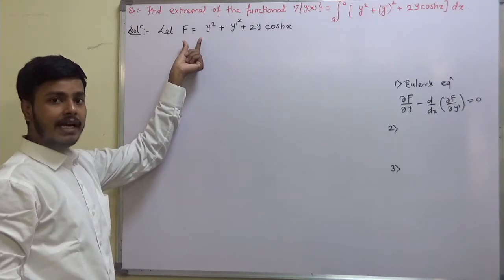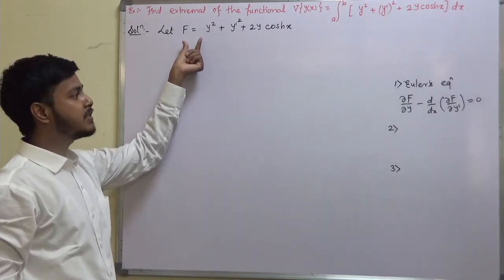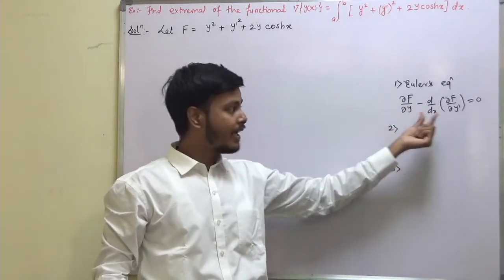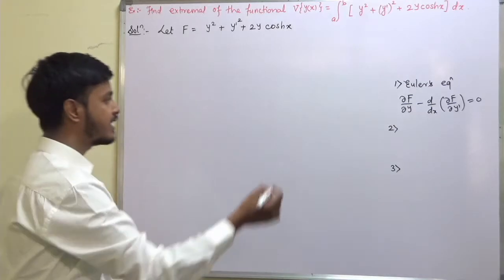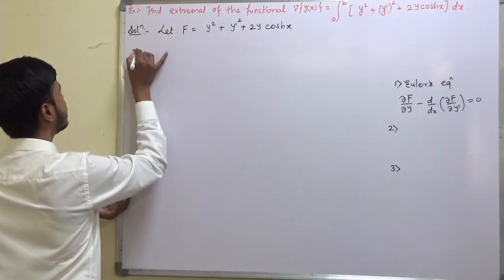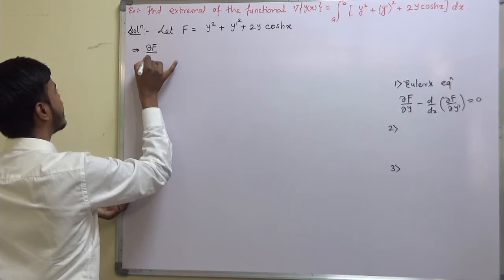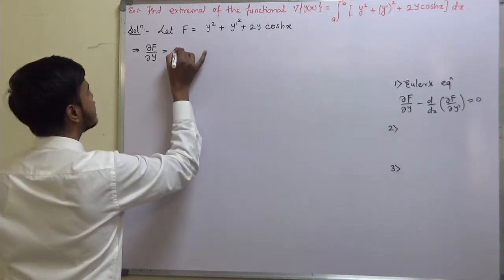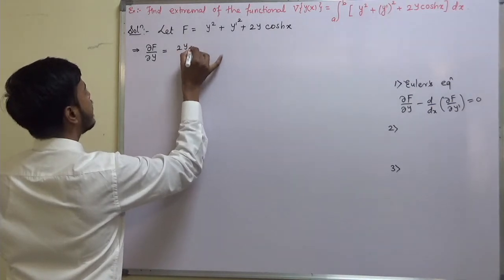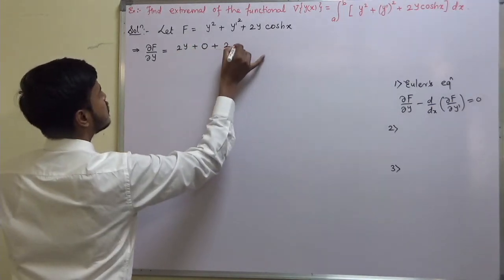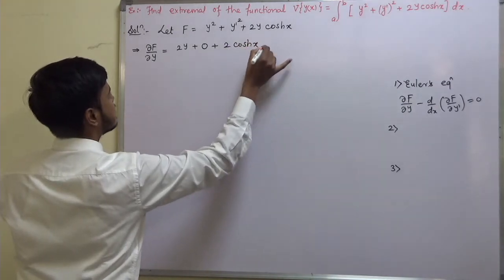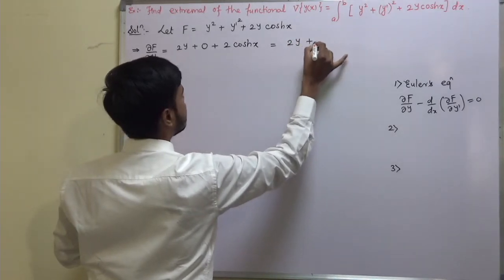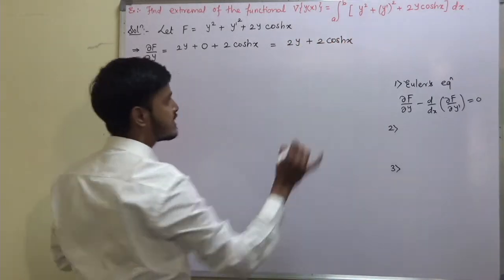To get the extremal using Euler's equation, we need del f by del y and del f by del y-dash. So del f by del y, taking the derivative with respect to y, gives us 2y plus 2 cosh(x).